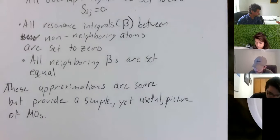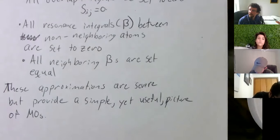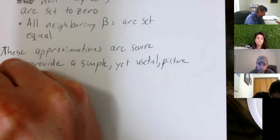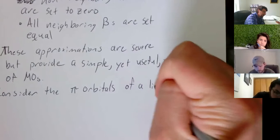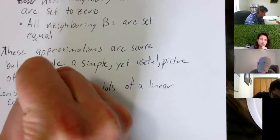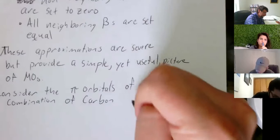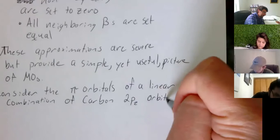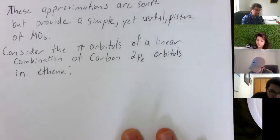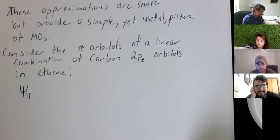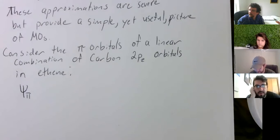What we're going to do, we're going to look at a simple system that has pi electrons. Consider the pi orbitals, the pi orbitals, of a linear combination of carbon 2pz orbitals, and ethene. Okay, what's a pi orbital, I guess? So, like a pi MO. Pi MO, okay.